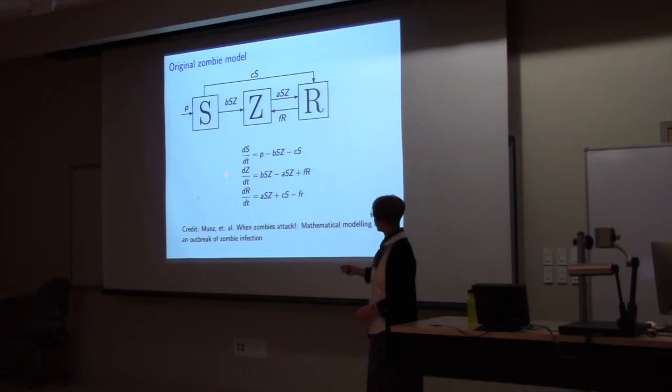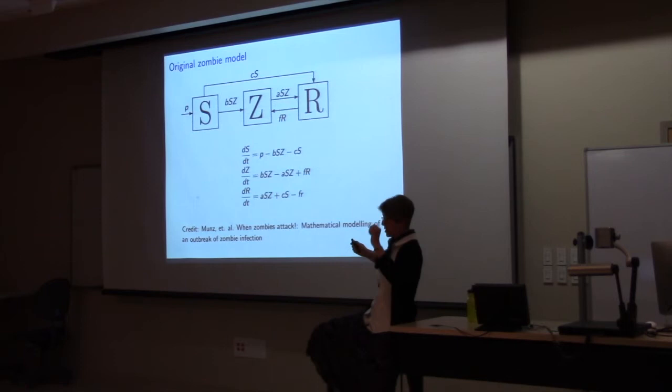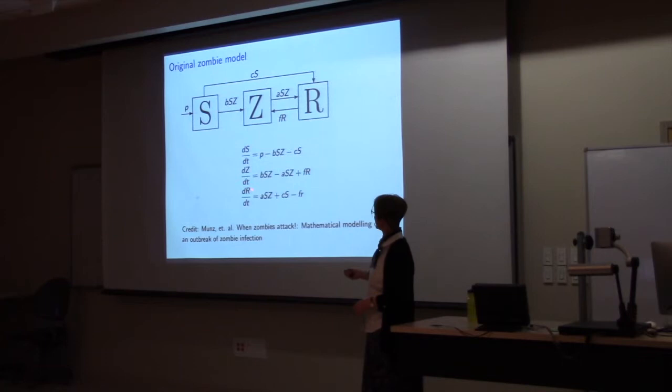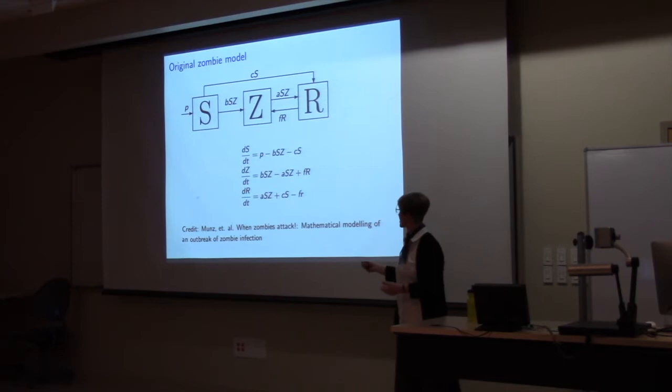So remember, that just means the change in humans with respect to time. Are the humans born, minus the humans that become zombies, minus those who die of natural causes. The change in zombies with time. Are the proportion of zombies who successfully bite humans and turn them into zombies, minus those who get killed by the humans, plus those who rise from the dead. And the change in dead bodies with respect to time. Well, when humans kill a zombie, when humans get killed by other means, and of course, when some, and then we subtract off the zombies that come out of there.